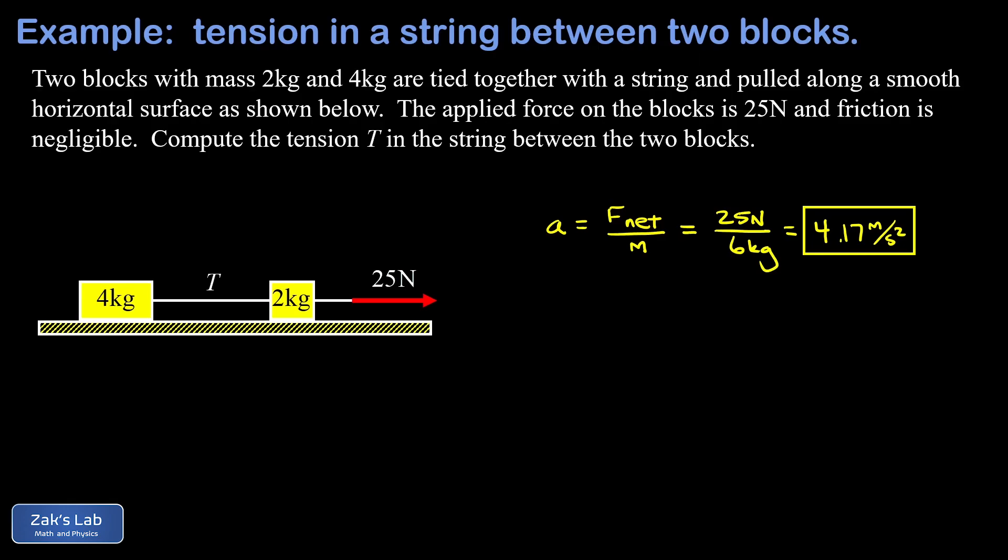And the analysis is going to be simplest on the 4 kilogram block here because the tension is the only force on this guy in the x direction. So we already know that the acceleration is 4.17 meters per second squared for this block.